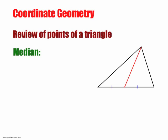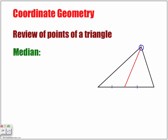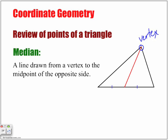What is the median? If we take one point — the vertex of the triangle, which is the corner — and we draw a line from that vertex to the midpoint of the opposite side, that line is what we call the median. The hash marks indicate that both halves of the opposite side are equal in length.